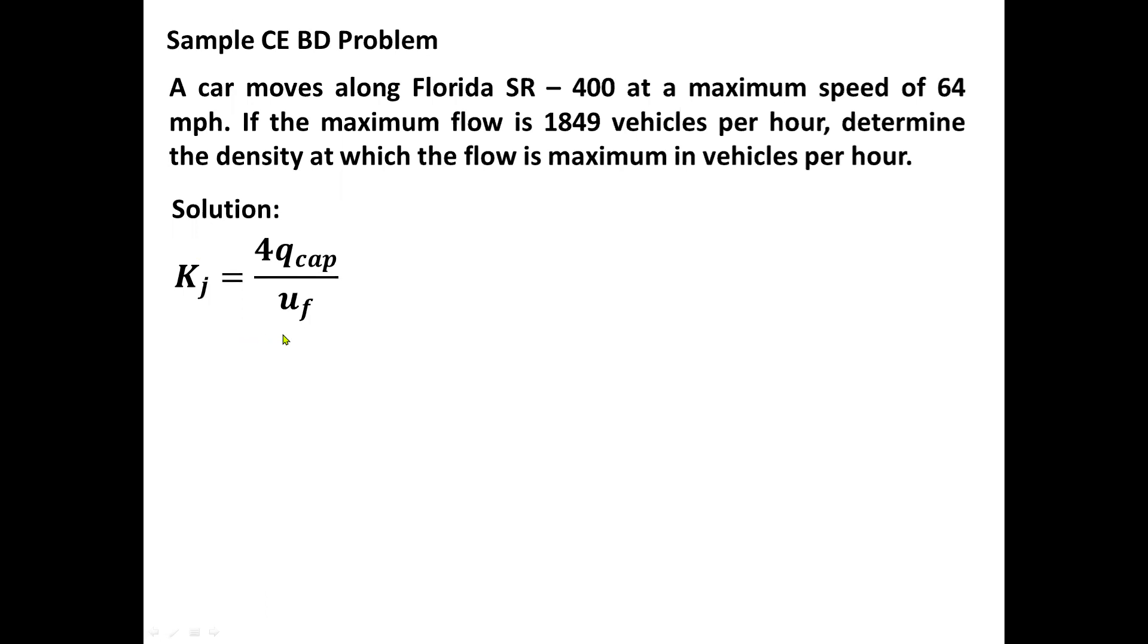For our solution, we will be using the formula K sub j equals 4 Q cap all over U sub f. Defining all the givens: Q cap, the maximum capacity, is 1,849 vehicles per hour from our given problem. K sub j, the jam density, has an unknown value, so we are required to solve for its jam density so that we can solve for the density at which the flow is maximum in vehicles per hour. So we must calculate first for the jam density.